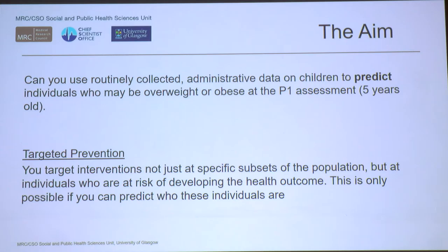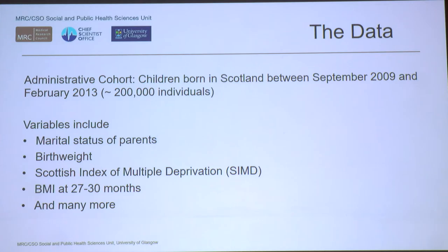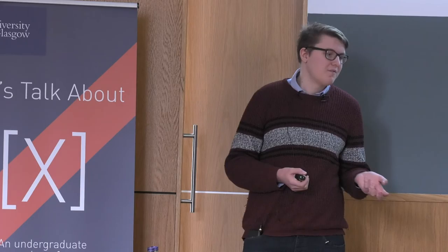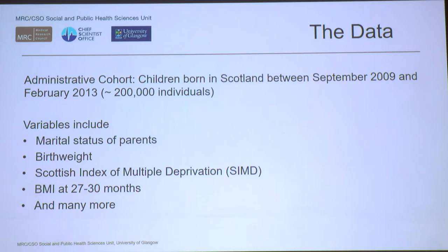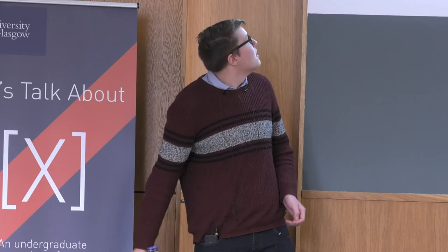Since we know obesity tracks throughout childhood, we wanted a specific targeted prevention model — targeting people before they'd become overweight in the first place, as early as possible, to prevent it affecting them through adolescence or into adulthood. The data we used covered almost all children born between September 2009 and February 2013. We used about 19 variables in total: things like country of origin, where they live, and the socioeconomic status of the parents.